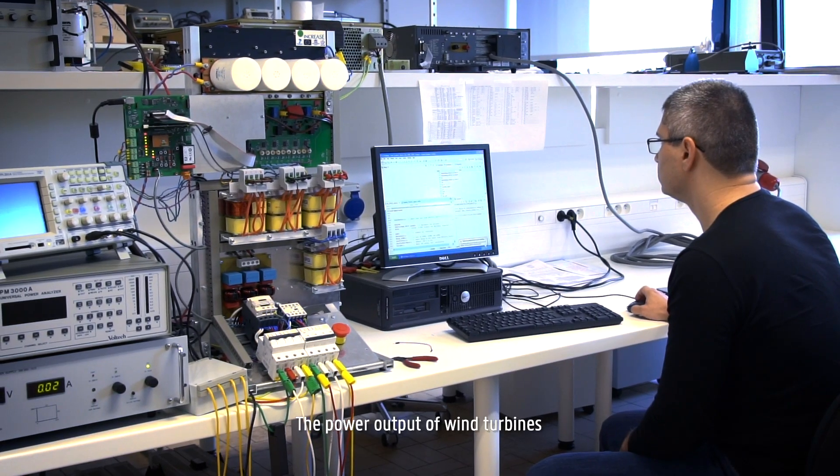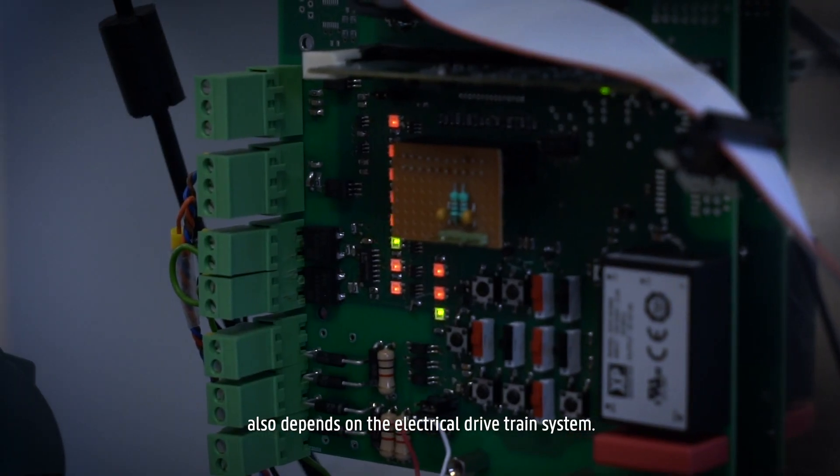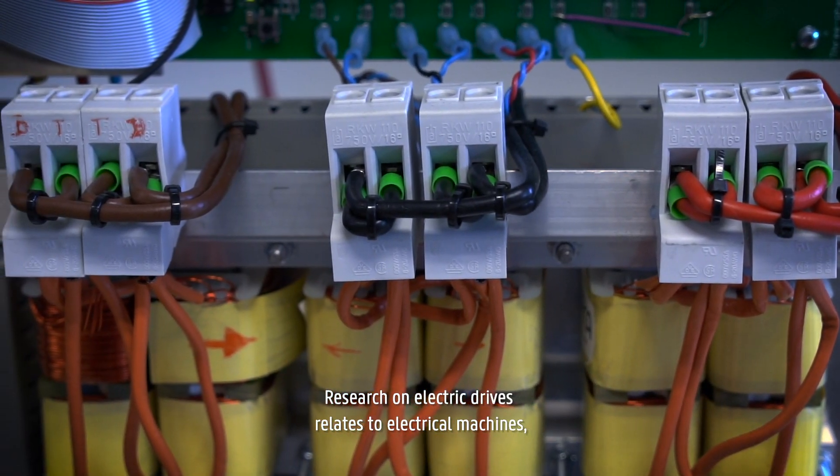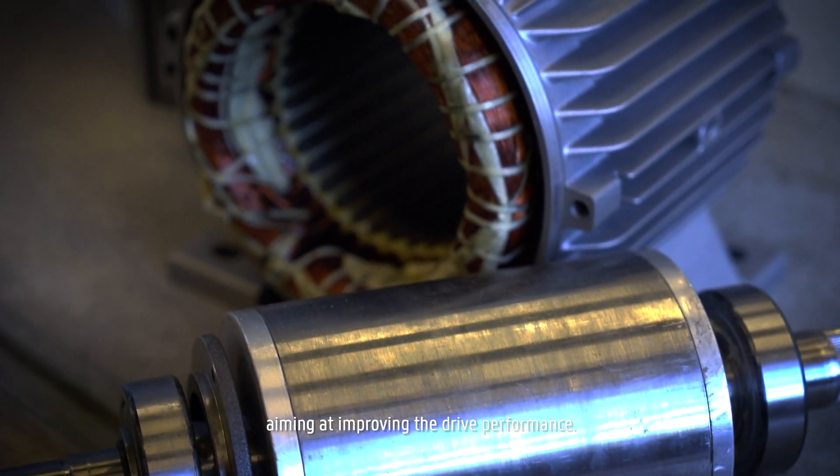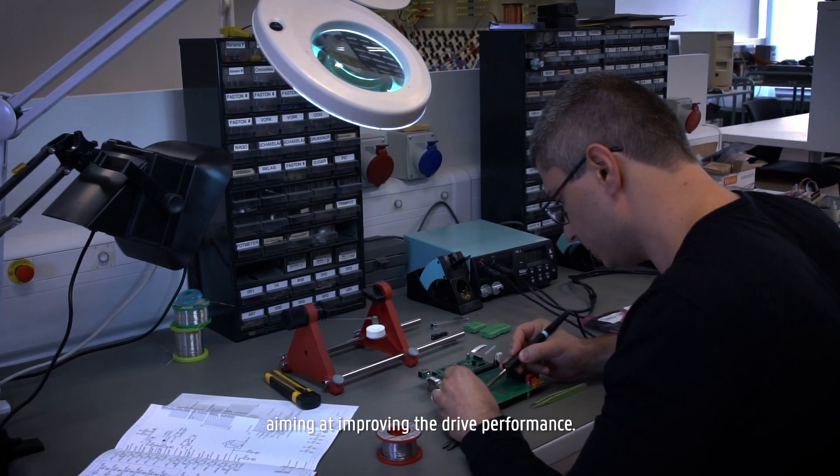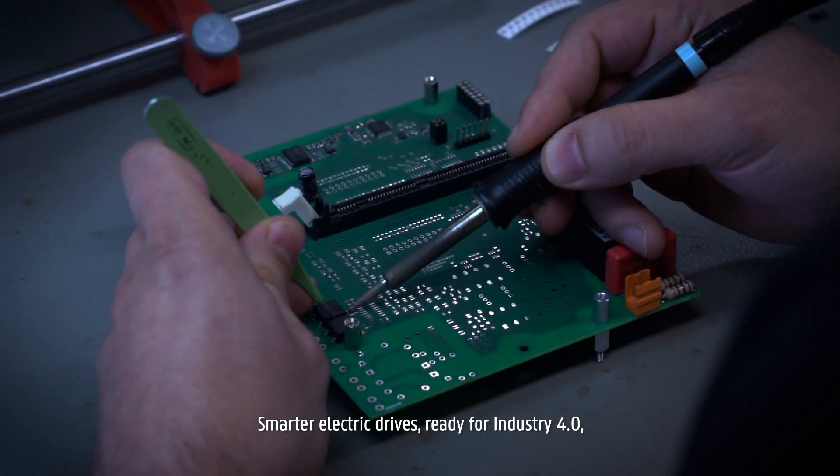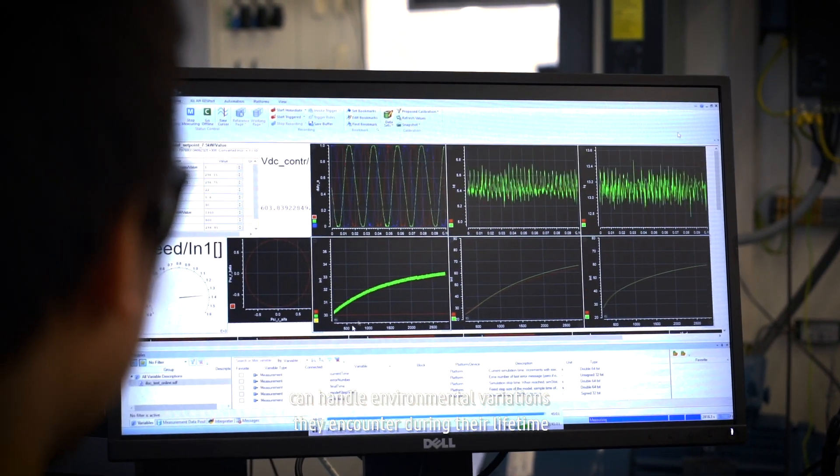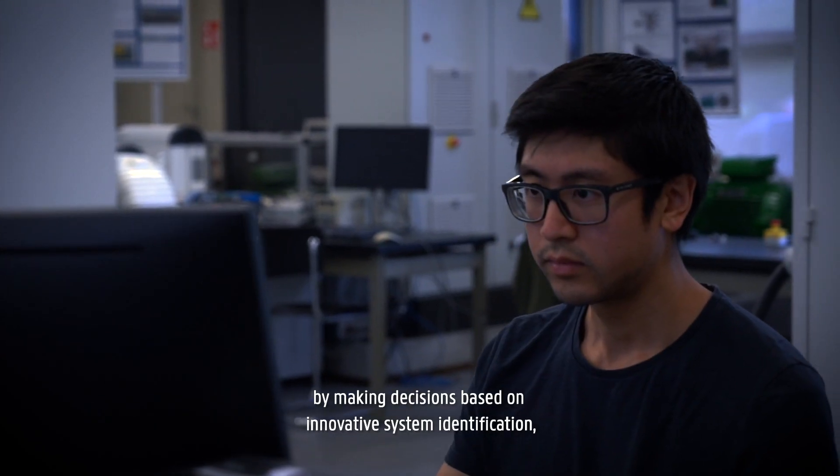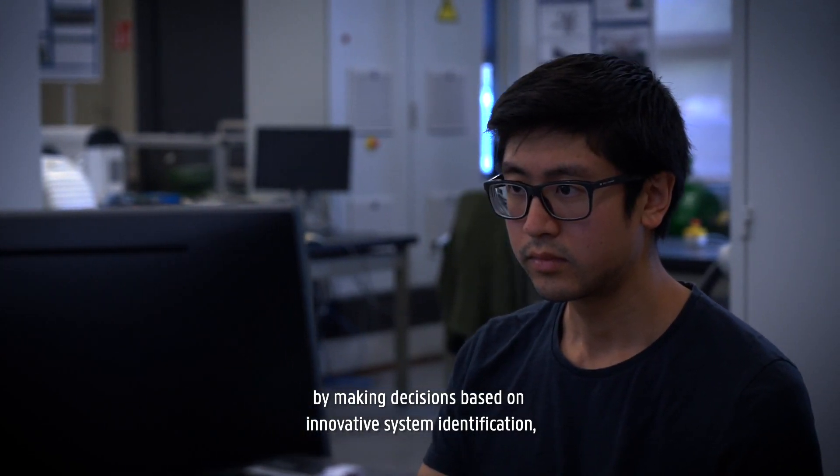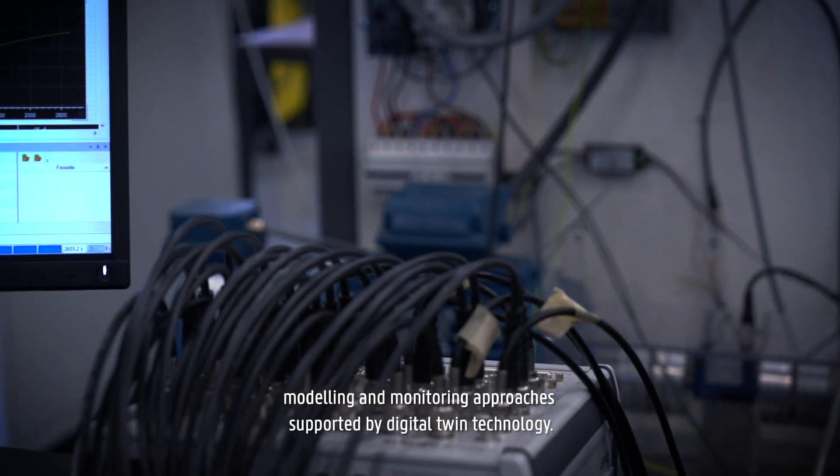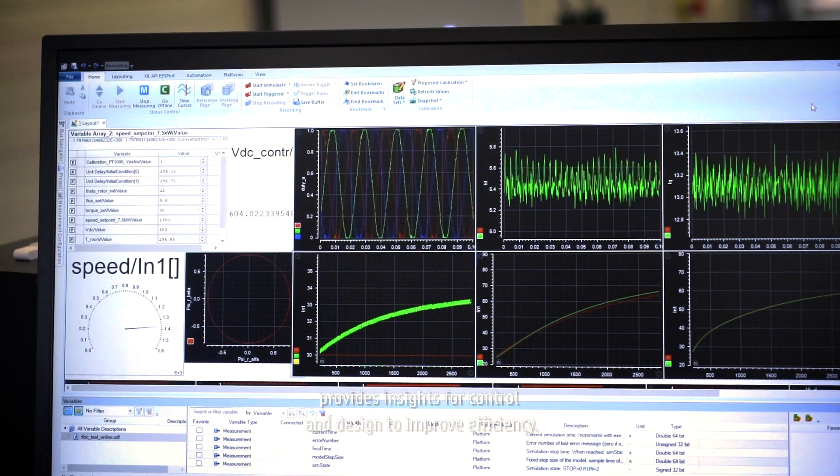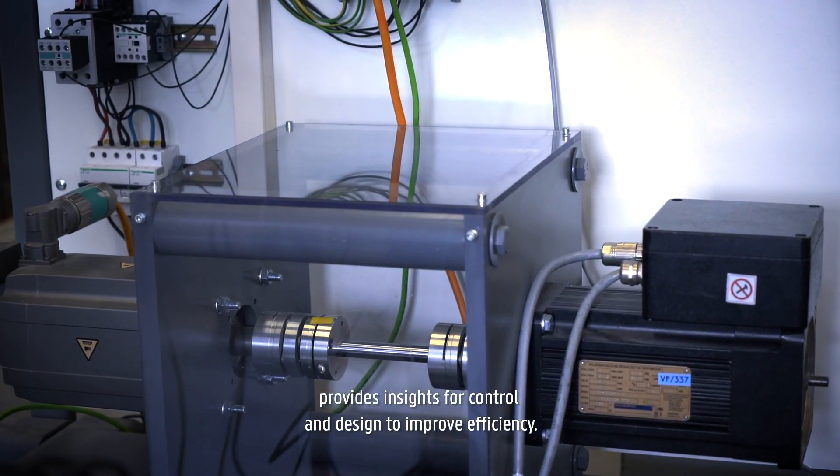The power output of wind turbines also depends on the electrical drivetrain system. Research on electric drives relates to electrical machines, their power electronic supply and their controller, aiming at improving the drive performance. Smarter electric drives ready for industry 4.0 can handle environmental variations they encounter during their lifetime by making decisions based on innovative system identification, modeling and monitoring approaches supported by digital twin technology. For instance, the temperature dynamics of a system provides insights for control and design to improve efficiency.